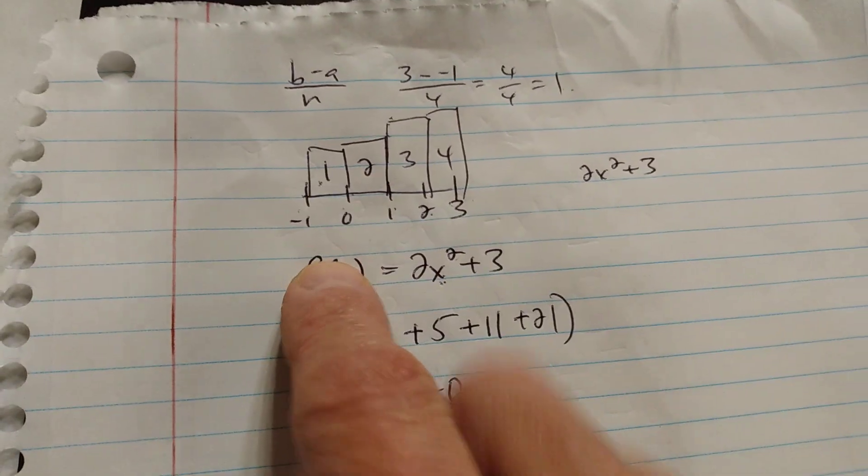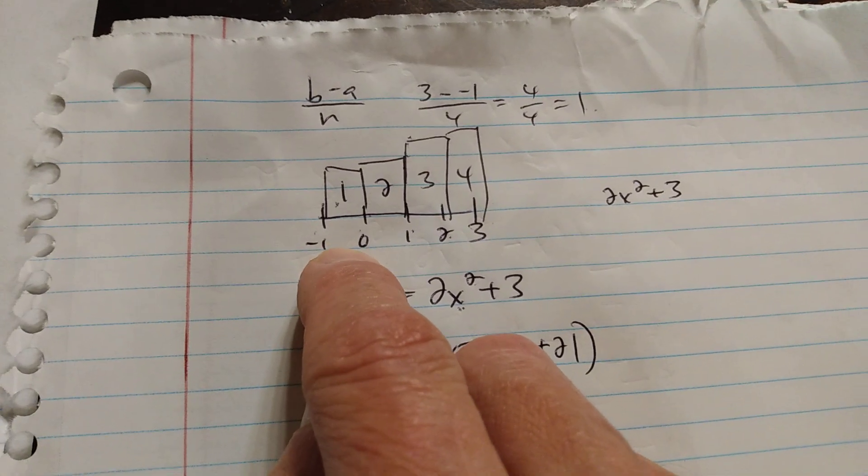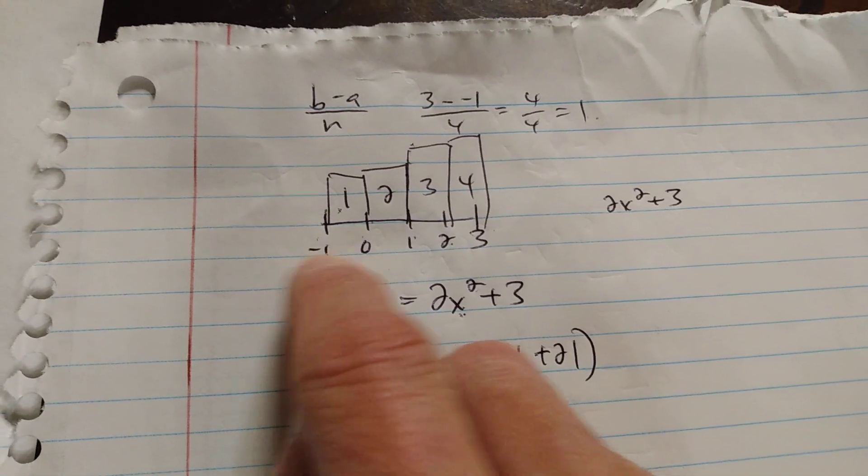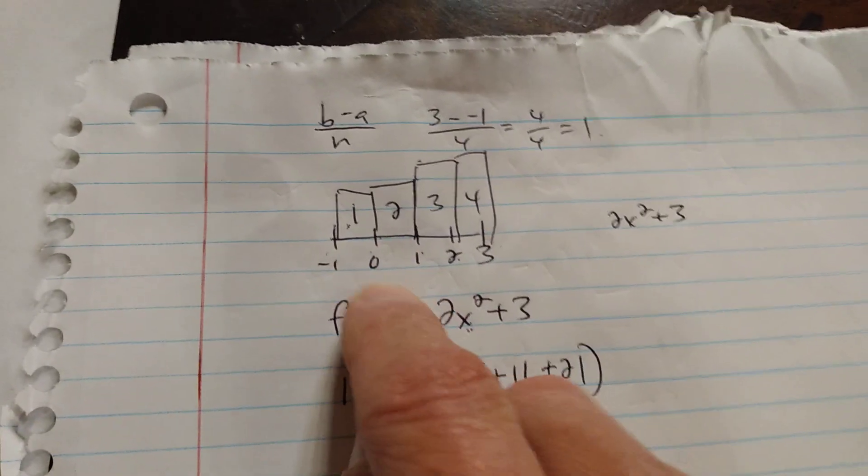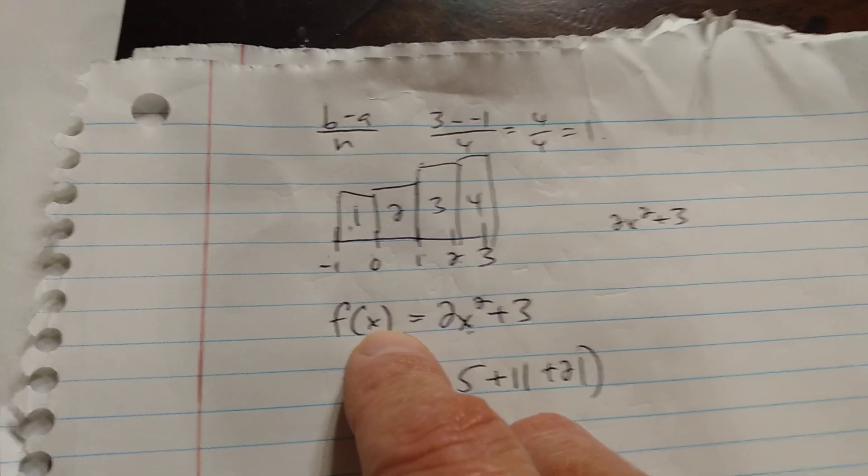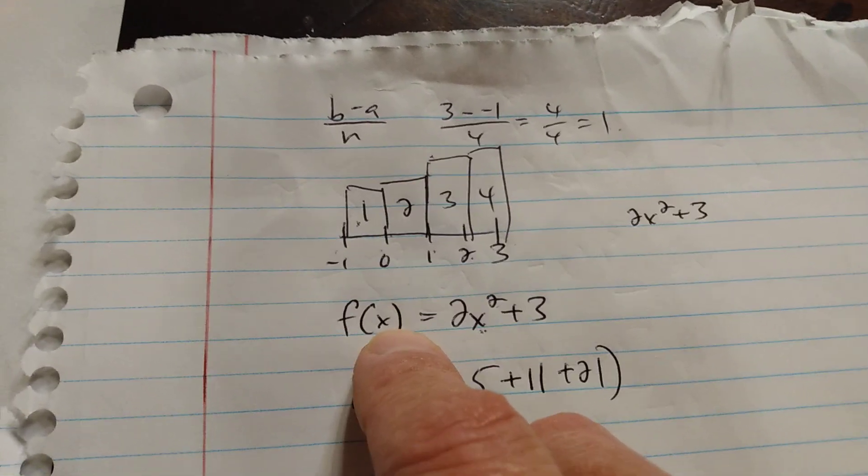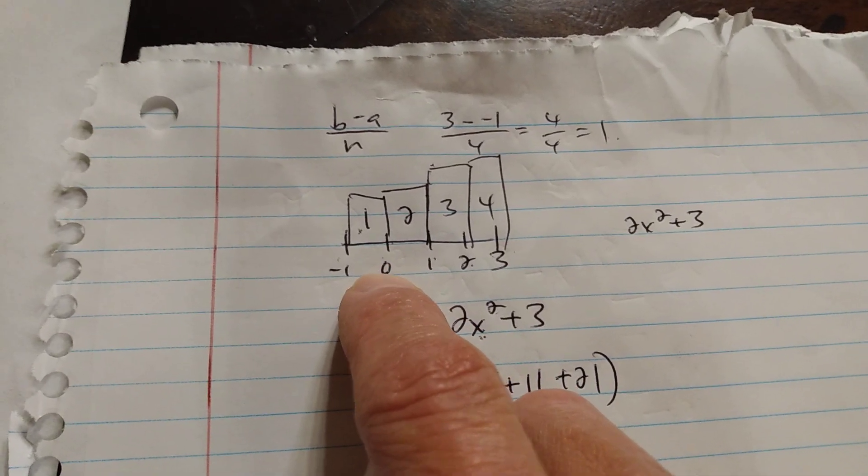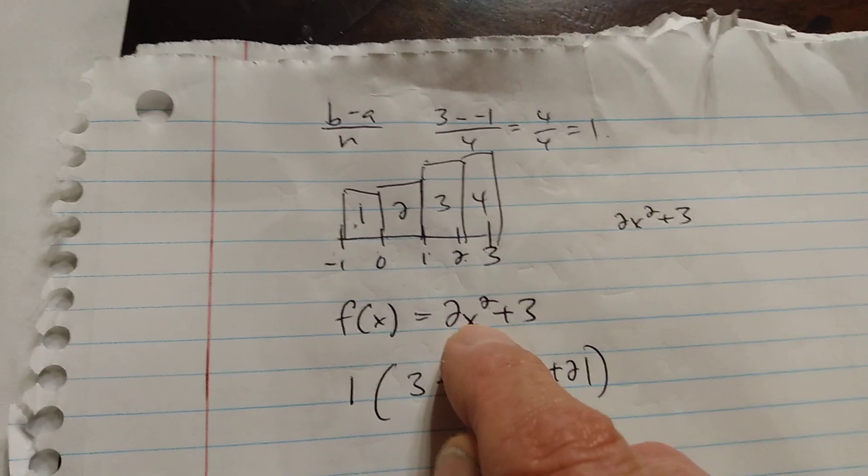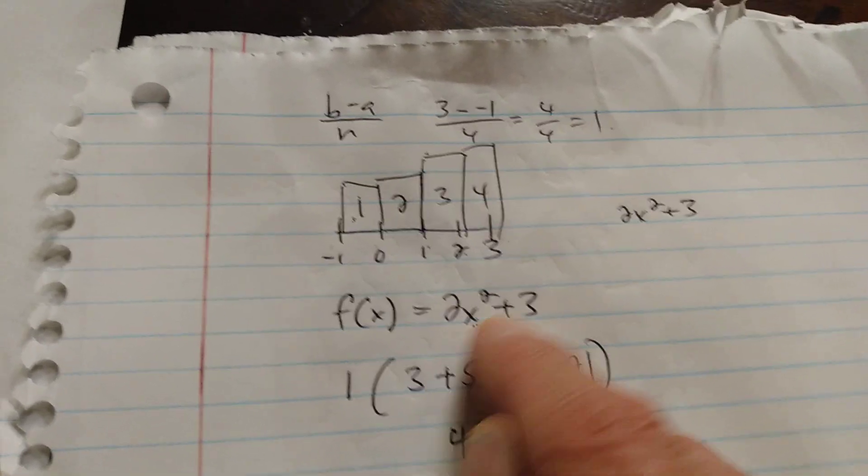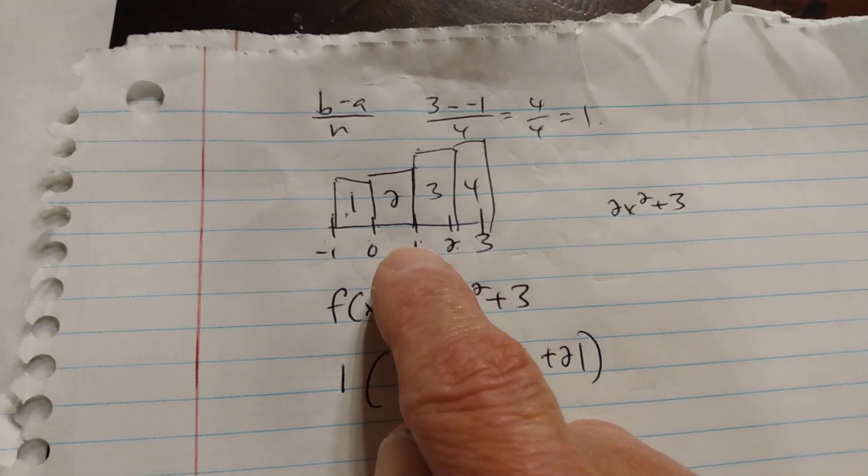Now, in our first triangle, the left side is the left, the right side is the right, and they said use right side. So what you do, f of x is the height of your rectangle, so you sub the right value. So this first one, 0. Sub 0 into this, 0 squared is 0, times 2 is 0, plus 3, 3. Go to my next rectangle.